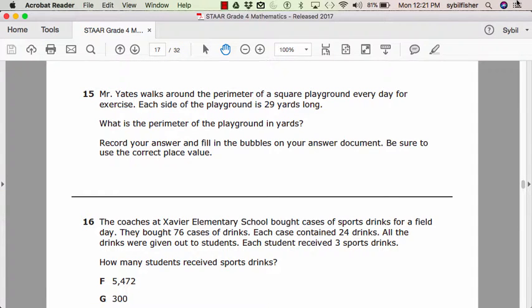Number fifteen. Mr. Yates walks around the perimeter of a square playground every day for exercise. Each side of the playground is 29 yards long. What is the perimeter of the playground in yards? Record your answer and fill in the bubbles on your answer document. Be sure to use the correct place value.